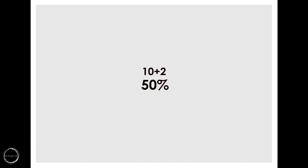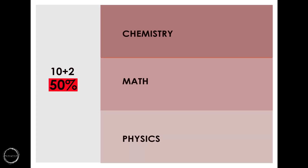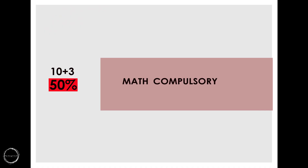Now let's talk about eligibility criteria. The candidate needs to pass 10+2 examination with a minimum of 50% aggregate in physics, chemistry and math. Also, you could be a candidate of 10+3 diploma, in which case you have to have math as a compulsory subject with at least 50% aggregate. Today, you need to have physics, chemistry and math in your 12th grade or you won't be able to attempt NATA.